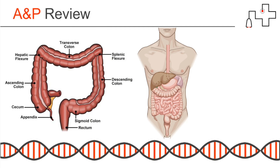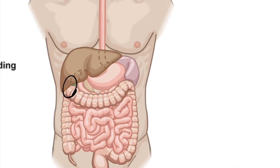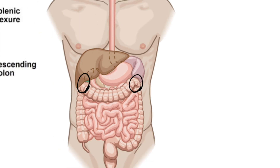A few structures to keep in mind: the colon is generally separated into three parts — the ascending colon, the transverse colon, and the descending colon — plus your rectum at the end. You also have the splenic flexure on your left side and the hepatic flexure on your right side. That's easy to remember because the liver is more on your right and the spleen more on your left. Looking at the image, the hepatic flexure sits right under the liver and the splenic flexure sits right under the spleen.